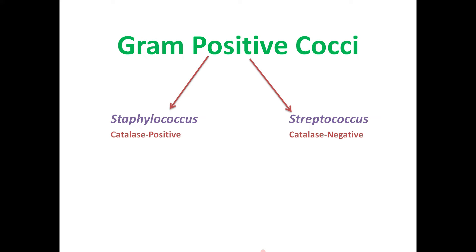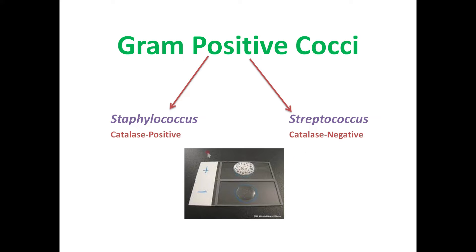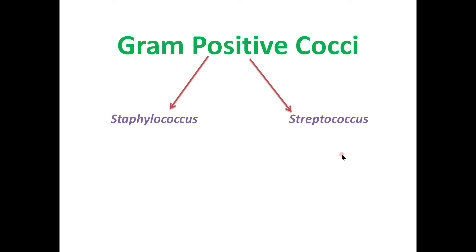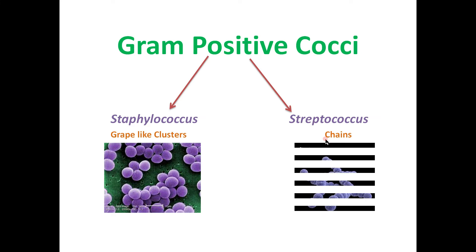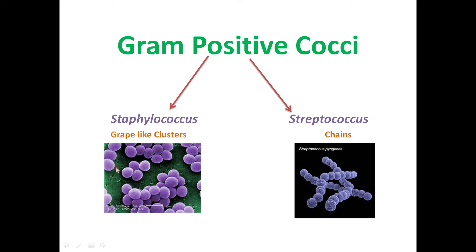On the basis of the catalase test, the gram-positive bacteria are classified into staphylococci and streptococci. Staphylococci are catalase positive while the streptococci are catalase negative. The other difference is that staphylococci are in the form of grape-like clusters while the streptococci are in the form of chains, as you can appreciate in the diagram.